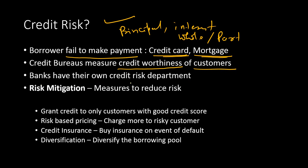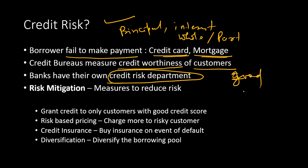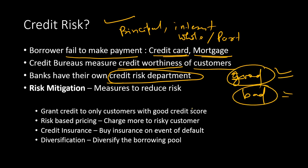Banks also have their own credit risk department, which takes care of the credit risk aspect and sets strict guidelines for the loan department on whom to provide loans to. Banks categorize customers as good or bad based on their credit score, and only good customers are given loans. Banks use different types of risk mitigations to reduce credit risk.